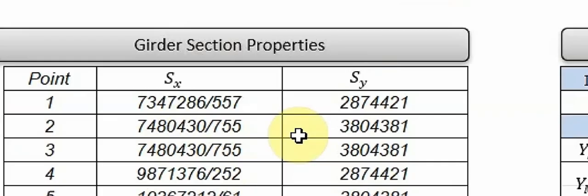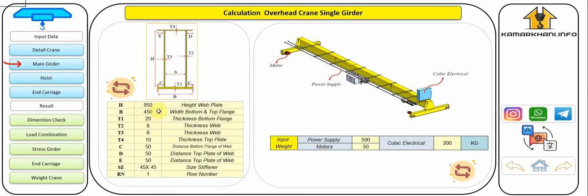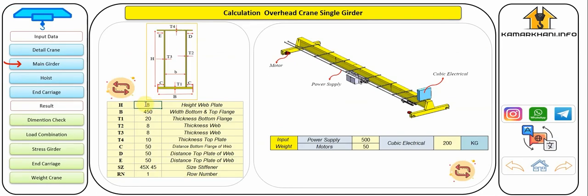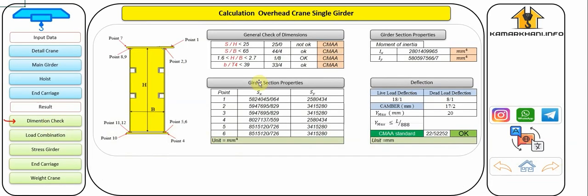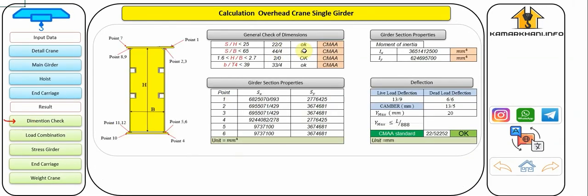In the first part of the results, checking the stuck dimensions, you can see the values obtained from the standard. If OK is displayed, it will be acceptable, and if it is not OK, it will be unacceptable. For example, these values will change as the height of the web changes. I emphasize again that you determine the size of the sheet according to the dimensions of the purchased plate so that it is economical.